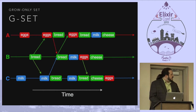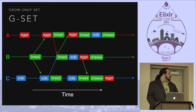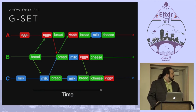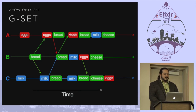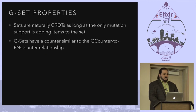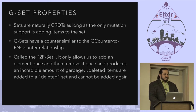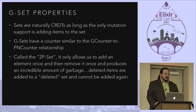This is a grow-only set, which is interesting. If you restrict set operations to only add, sets are CRDTs. It's pretty simple — if something already exists, it exists. The problem obviously is you can't remove items from that list easily. If you think about having something similar to the PN counter concept, you end up with a two-piece set.